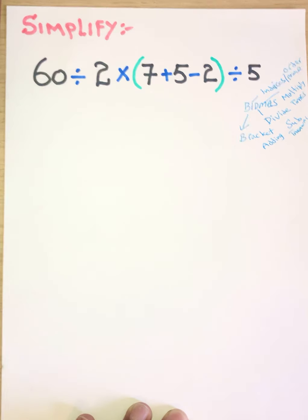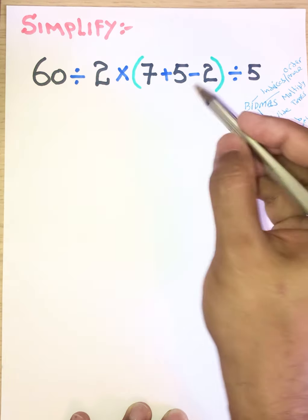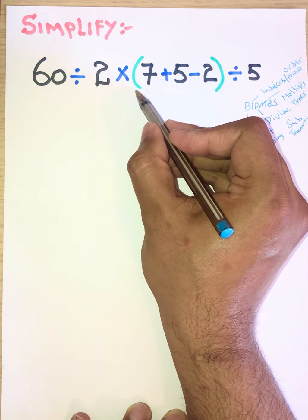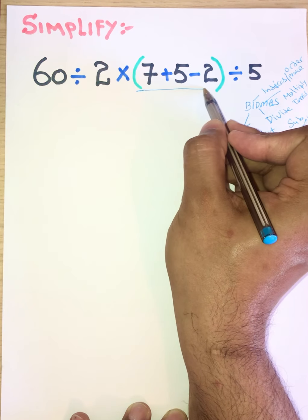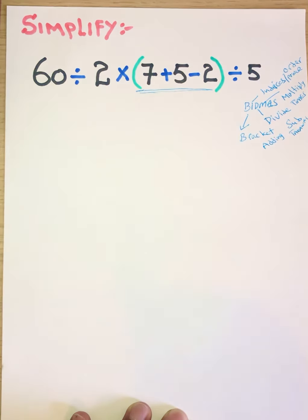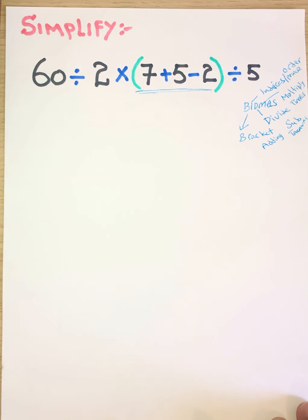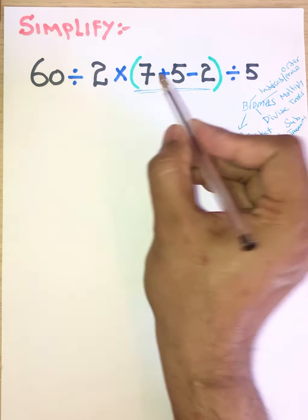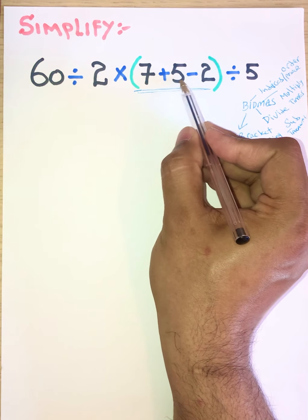So here first we will see what operation is it. This is a bracket. We need to solve the bracket first. It does not matter what inside the bracket is - add coming first or division coming first or multiplication or subtraction. We need to solve first in bracket. Whatever comes up in bracket we have to solve that. So we have values 7 add 5 minus 2.